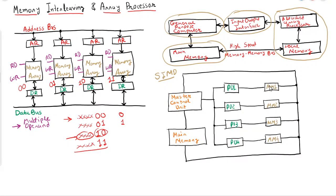From all the modules, data will be retrieved into the processing units, the data will be processed, and whatever result is produced will be sent back to the memory module — this is how parallel execution takes place. Recalling C equals A plus B from the previous video, the common operation such as addition is performed in all processing units, with only the data changing across units.